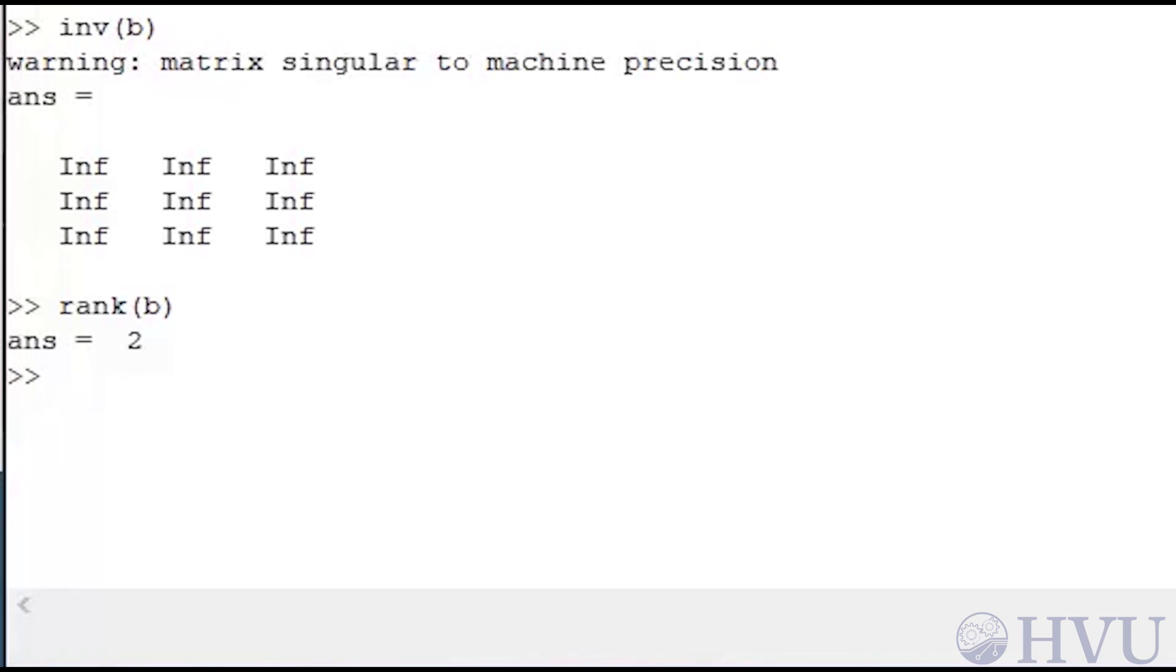Now I'll check the rank of the previous matrix A. The rank of A is 3, and since that matrix had 3 rows, it's full rank, and Octave had no trouble inverting it.